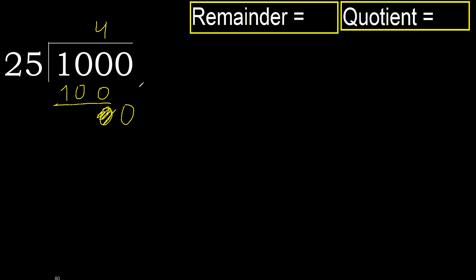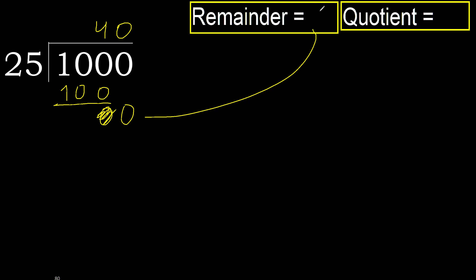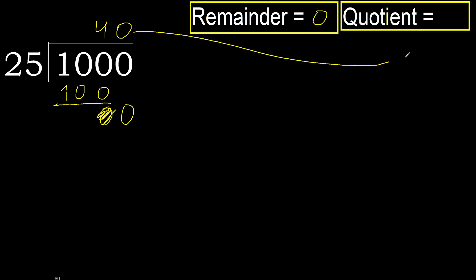There is no next number, therefore finish it — complete. Always complete with 0. Complete because here we finish it with this number. Therefore 1,000 divided by 25 is 40.